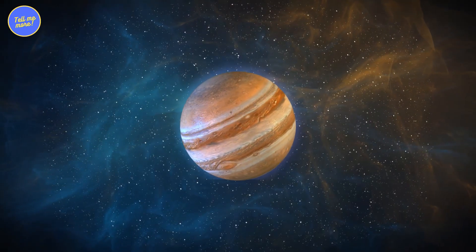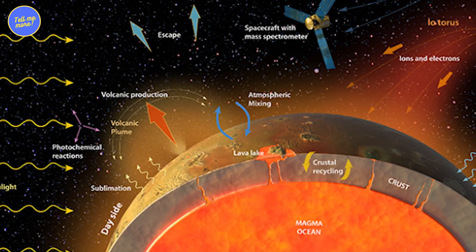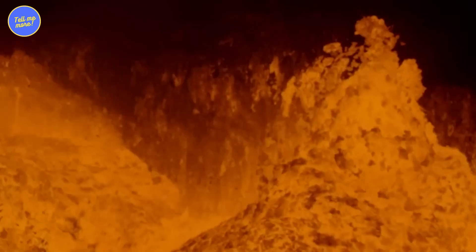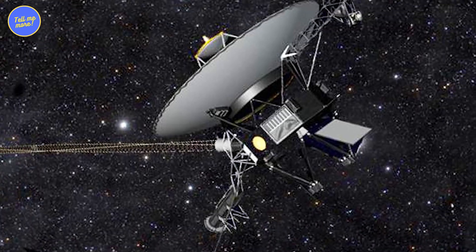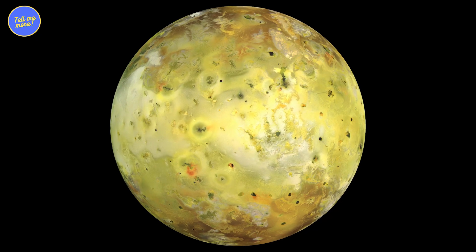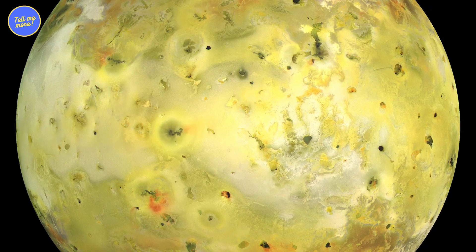The reason for this constant volcanic rager? Blame Jupiter and its gravitational tugs, which heat up Io's insides. It's like a cosmic lava lamp that never stops grooving. Voyager and Galileo gave us a front-row seat to this volcanic extravaganza, making Io the rock star moon of the solar system.